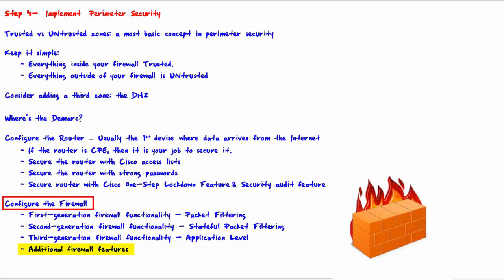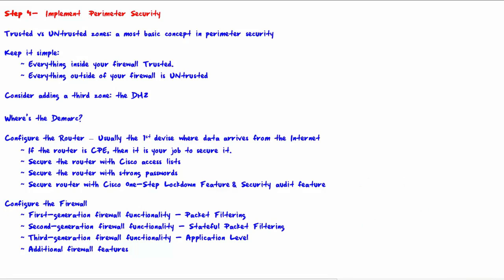In addition to first, second, and third generation firewall functionality, many firewalls include other security features such as VPN capabilities, content filtering (which allows you to block end users on your LAN from accessing certain websites), gateway antivirus, intrusion prevention, anti-spyware, and logging and alerts. Even though all of these features are not part of the core firewall generations, they are features that many firewalls do give you, and you definitely want to take advantage of them. That is the end of this video — we will see you in step five.